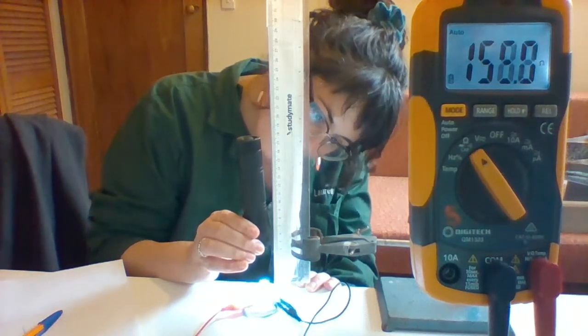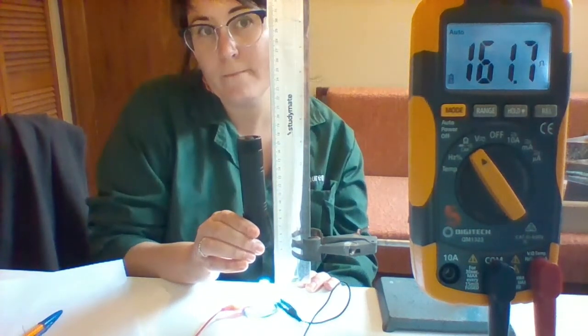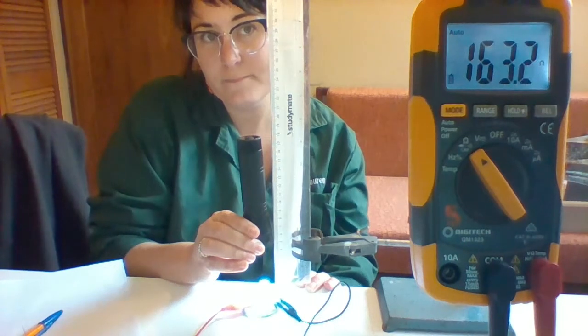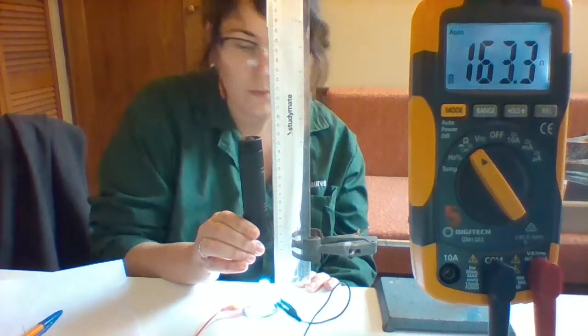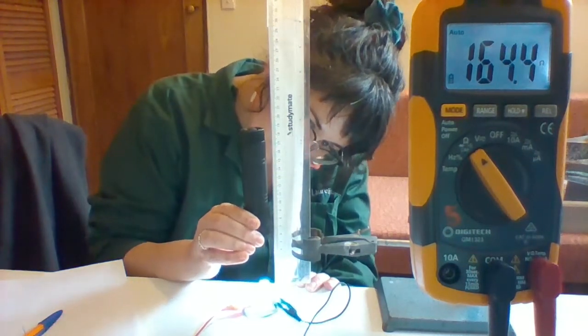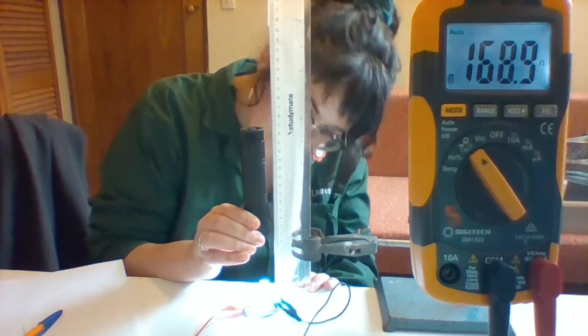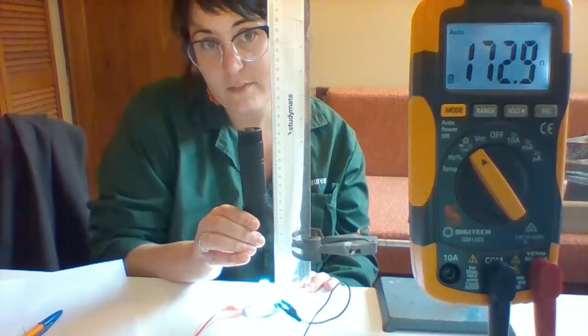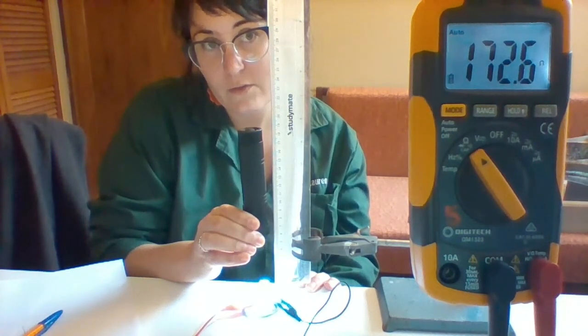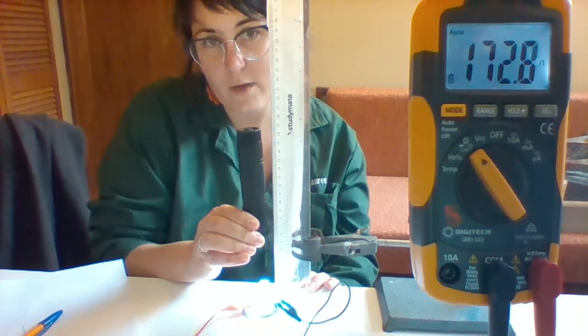50 millimeters. What are we looking at now? That's 50 millimeters. Now 60 millimeters. What's that? Resistance at 60 millimeters, 60 millimeters away from the light source.